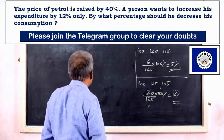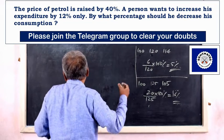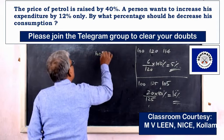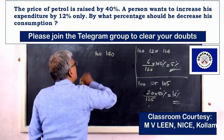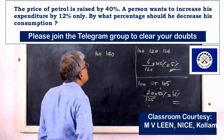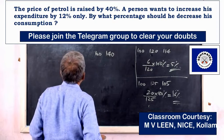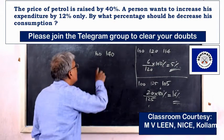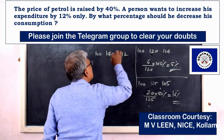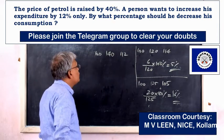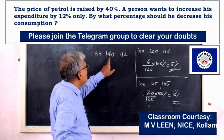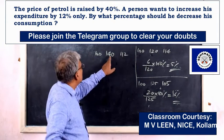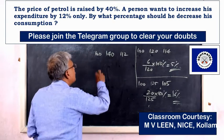Next question — the second one. The price of petrol is raised by 40%, so 100 becomes 140. The person wants to increase his expenditure by only 12%, so 100 becomes 112. How much is the reduction? 140 divided by 5 equals 28.